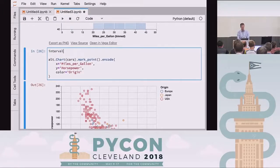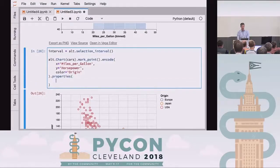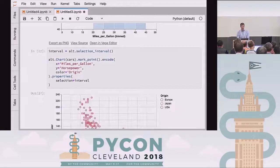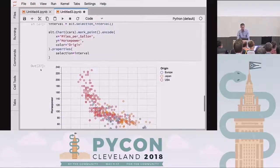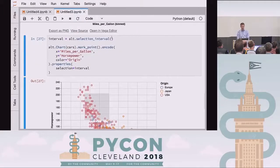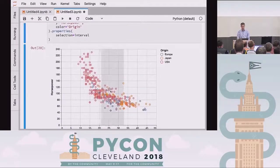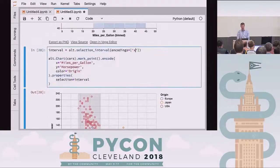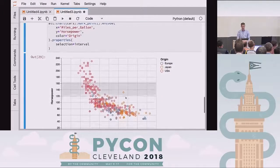If we do interval, we're going to make an interval selection — alt.selection_interval — and I'll just add this to the chart right here. The chart has a way to add properties, and I'm going to make selection equals interval. An interval selection is where you click and drag and create a box that you can move around. The interval selection can be in two dimensions, or we can say encodings equals X to get an interval selection in one dimension, or encodings equals Y for an interval in the Y direction.